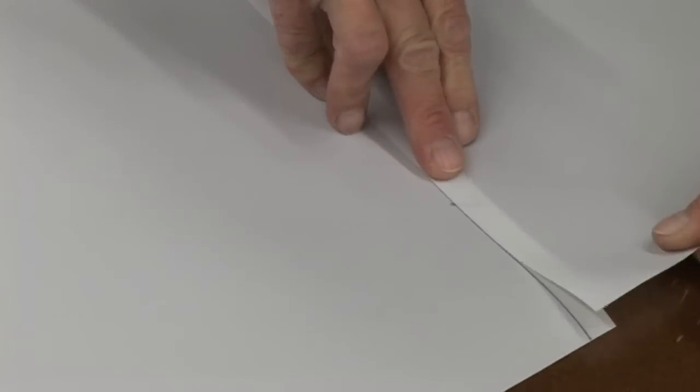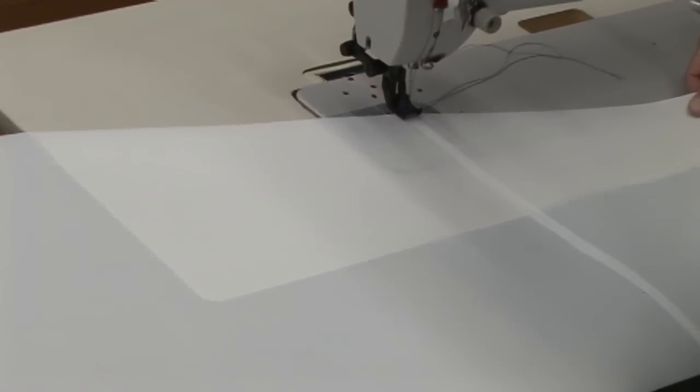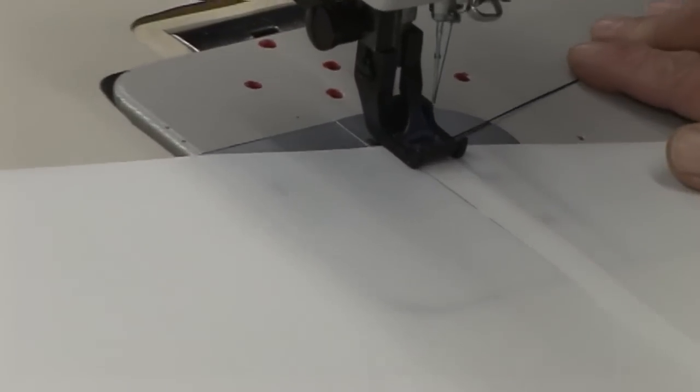As you can see in the video, just line up one panel with the lines that have been pre-plotted onto the other panel. Then we'll sew a zigzag stitch along this seam.